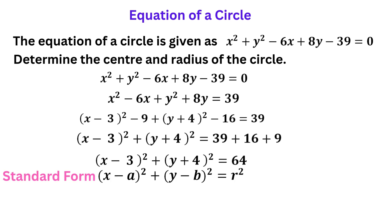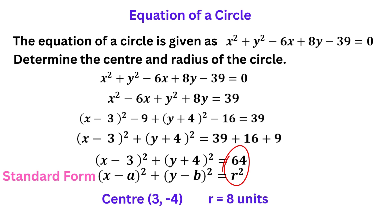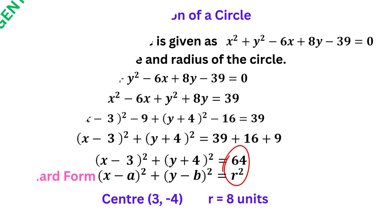If we compare this with the general form, on the left, minus A equals minus 3, so A equals 3. In the second bracket, minus B equals 4, so B equals minus 4. So the centre is positive 3 for the X coordinate and negative 4 for the Y coordinate. Comparing the terms on the right, we get R squared equals 64, which means that R is the square root of 64 — that's 8 units.